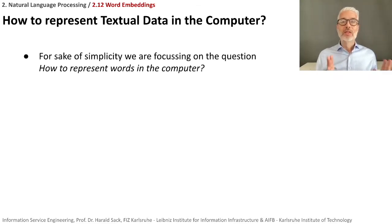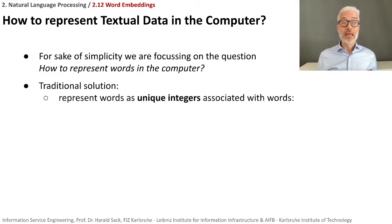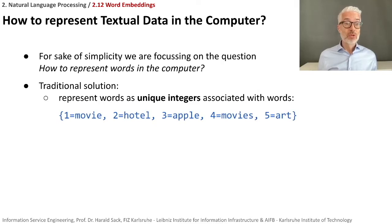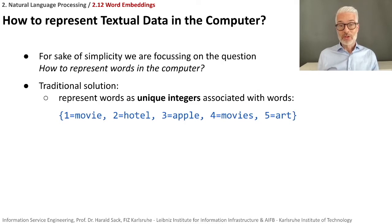For the sake of simplicity, we are going to focus on the question of how to represent single words in the computer instead of arbitrary textual data. One very traditional solution is to represent words as unique integers associated with the words — for example, 'movie' is one, 'hotel' two, 'apple' three, 'movies' four, 'art' five. You could also choose prime numbers to individually identify single concepts and then compose concepts by multiplying — an idea proposed by Gottfried Wilhelm Leibniz, the famous 18th century philosopher and mathematician.